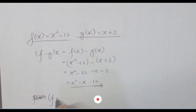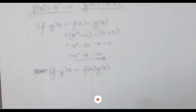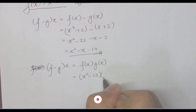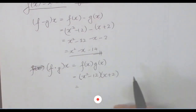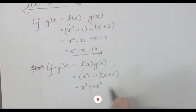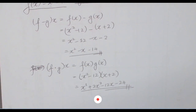Now let's calculate the multiplication of two functions. (f · g)(x) = f(x) · g(x) = (x² − 12)(x + 2). Expanding: x² · x = x³, x² · 2 = 2x², −12 · x = −12x, −12 · 2 = −24. So (f · g)(x) = x³ + 2x² − 12x − 24.